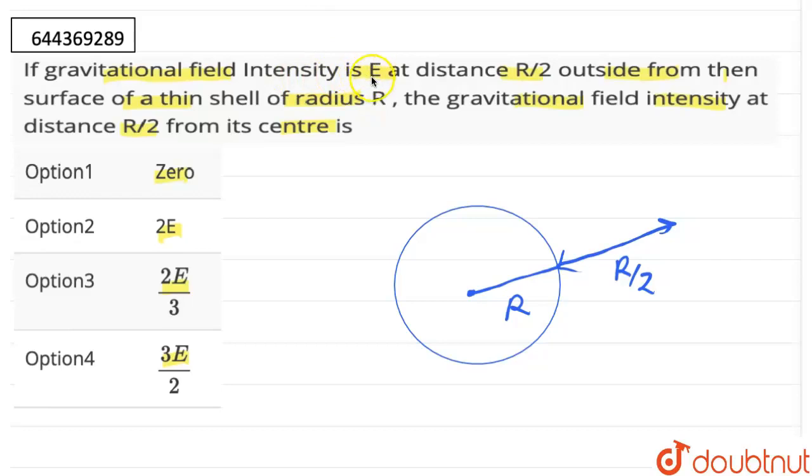The gravitational field intensity is E. We have to calculate the gravitational field intensity at a distance R/2 from the center. So let us say this is our distance R/2 from the center, and we have to calculate the gravitational field intensity here. So let us complete a Gaussian surface in the form of a sphere with radius R/2.